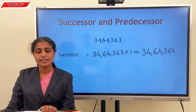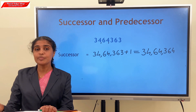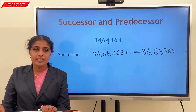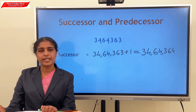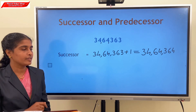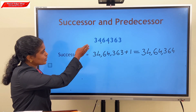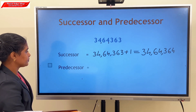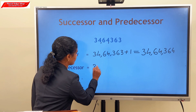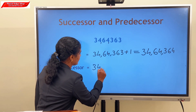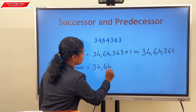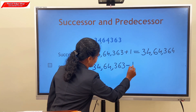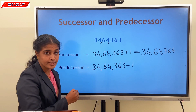The predecessor of a number is the number which is just before the given number. It can be obtained by subtracting 1 from that number. Consider the predecessor of 34,64,363: 34,64,363 minus 1.